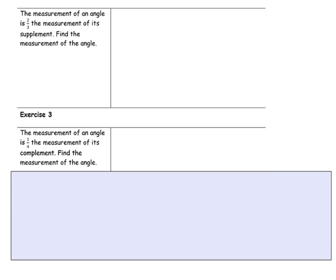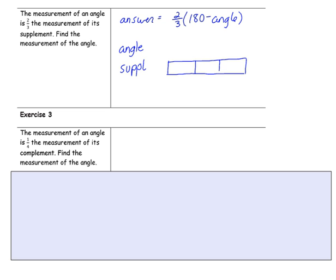Example 3: The measurement of an angle is two-thirds of the measurement of its supplement. Find the measurement of the angle. I want to revisit what we've done with tape diagrams to solve this problem. The supplement would be 180 degrees minus the angle, and the answer is two-thirds of that. Using a tape diagram, I'm going to have one tape for the angle and another tape for its supplement, and the supplement will have three sections because of the denominator 3. The angle is two-thirds of that.